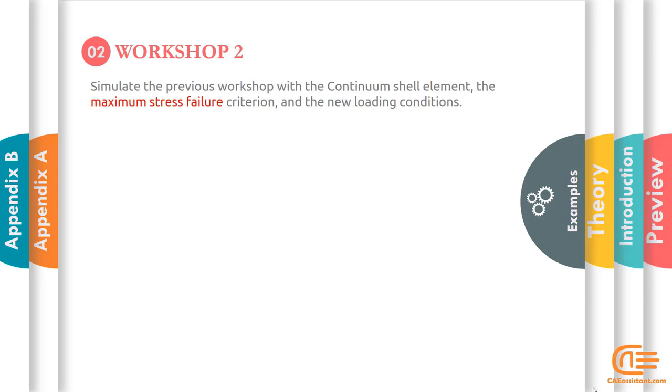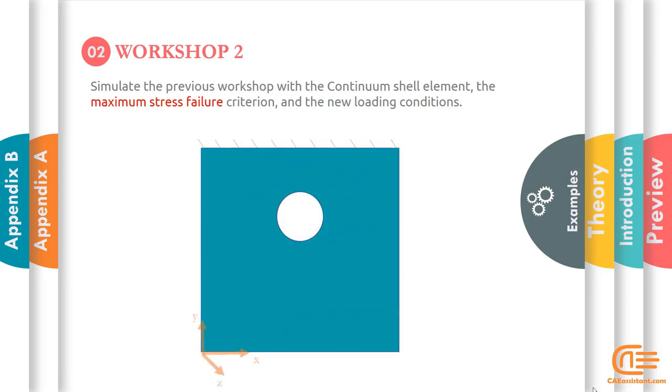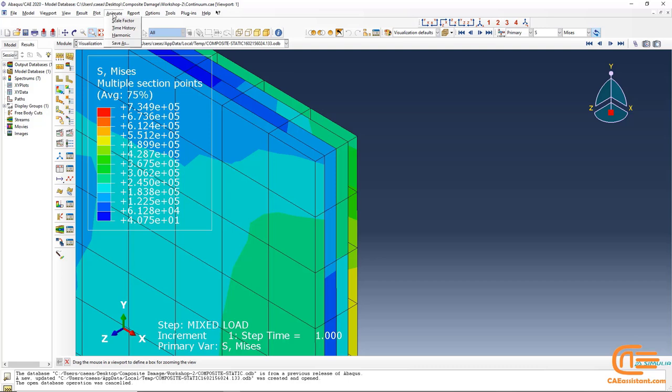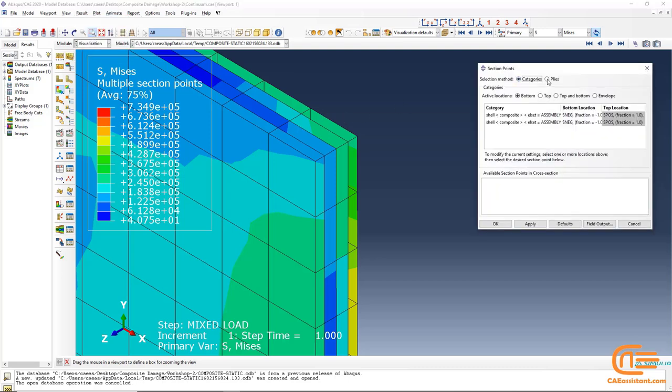In this simulation, in the same way, we do the same simulation as before, but the model is three-dimensional and uses the continuum shell. You can read the stress results in each layer. Similar to the previous example, we use the section point and the pile's method.